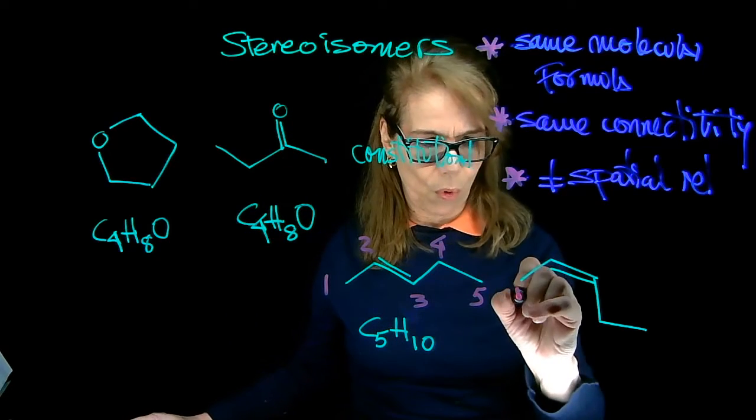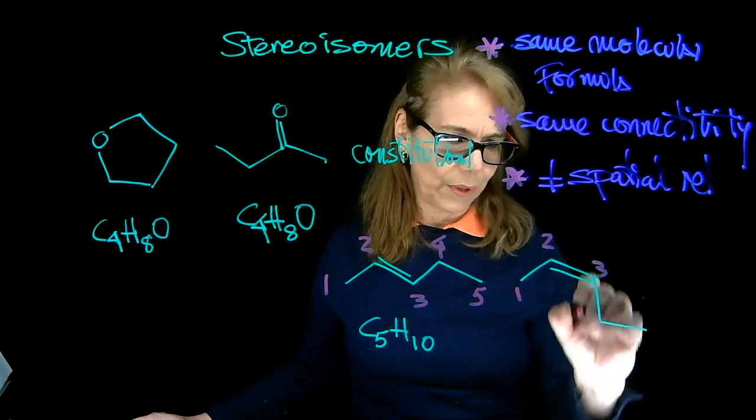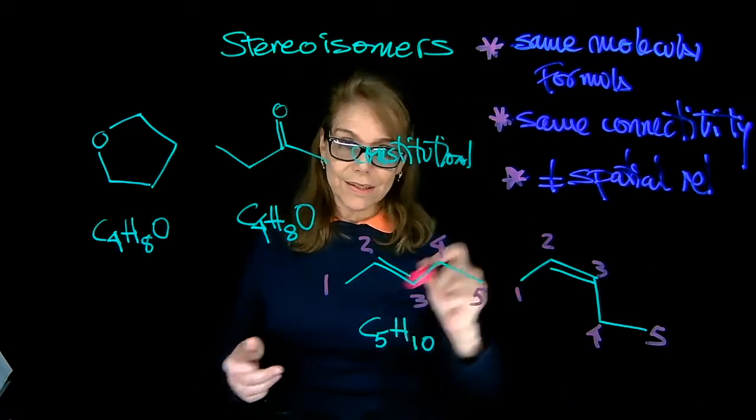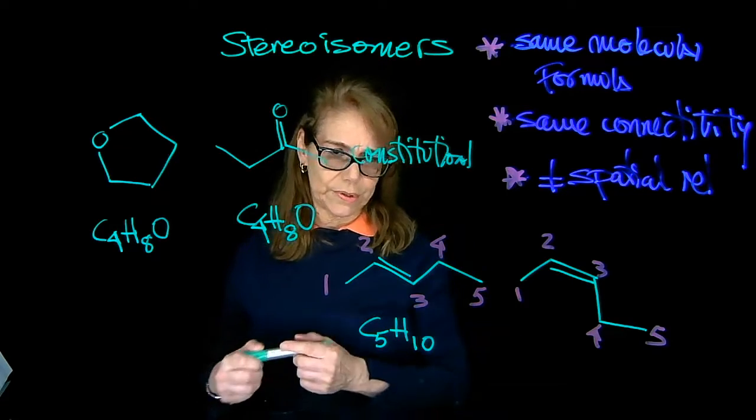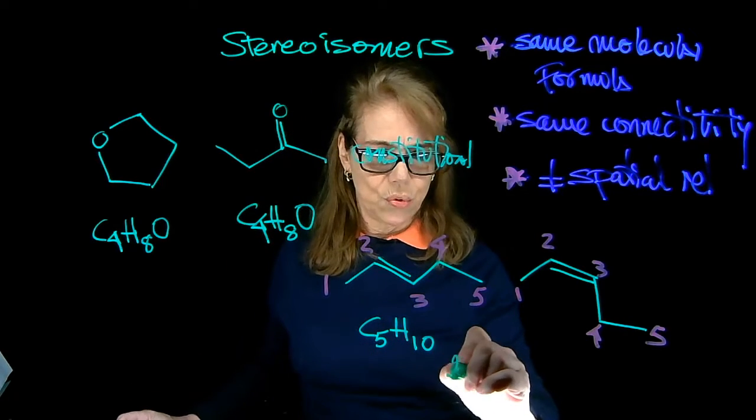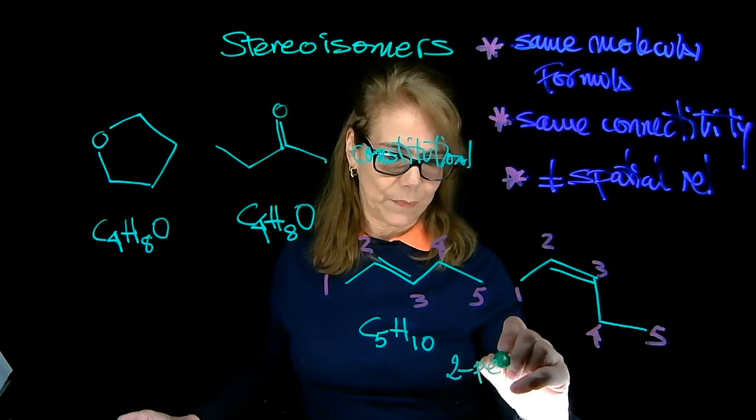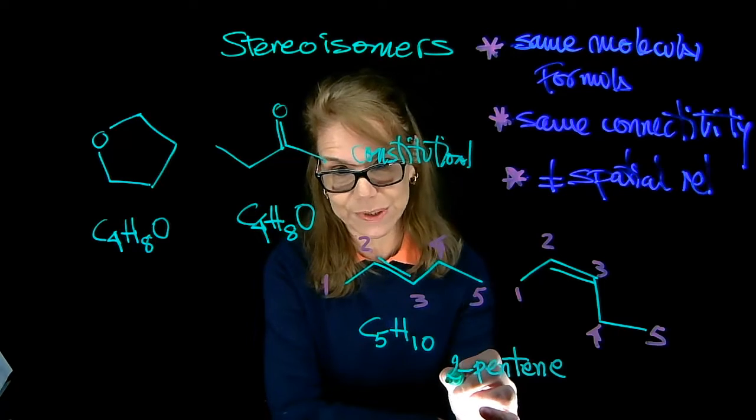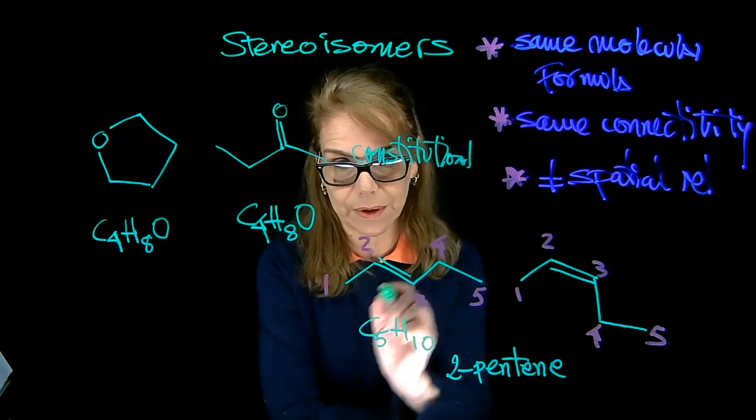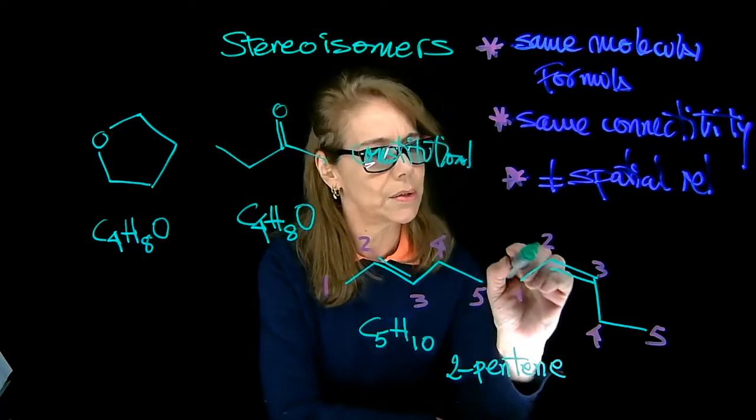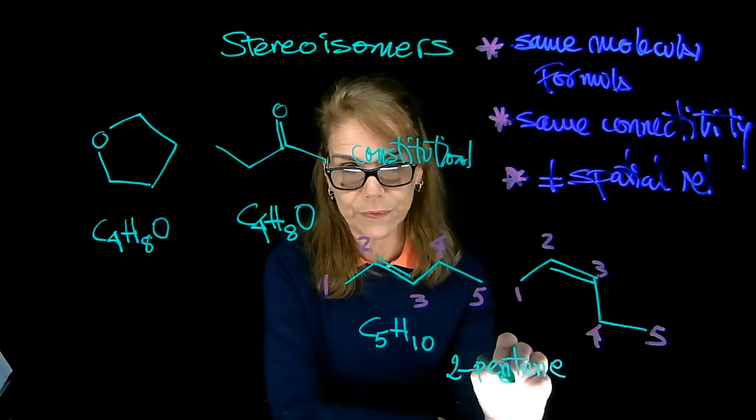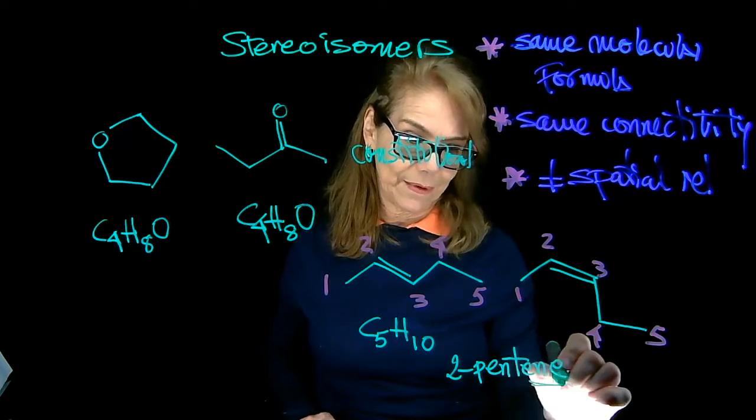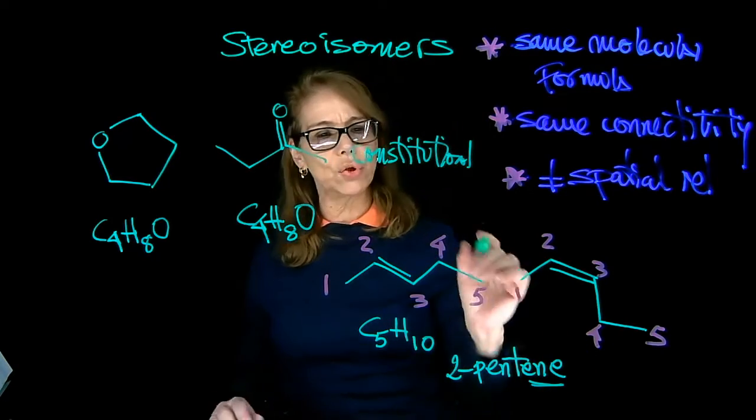And here I do 1, 2, 3, 4, and 5. So actually, these two molecules are 2-pentene. So 2 is saying the position of the double bond. It starts here at carbon 2. It's between 2 and 3. Pent is a prefix for 5 carbons, and ENE is the termination for alkenes. So 2-pentene.